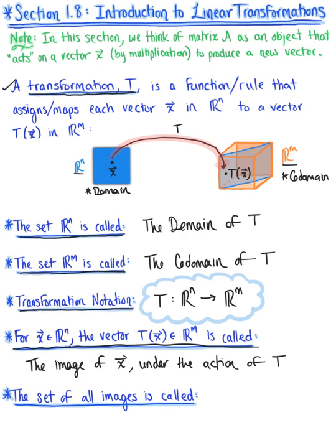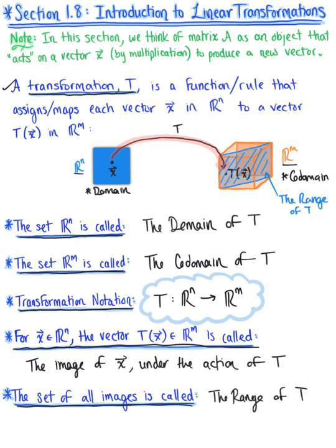Now this set of images is special — it is called the range of the transformation. The set of all images is called the range of our transformation. Looking at our illustration, we can see this region shaded in blue within the codomain — that shaded region is the range. The range exists within the codomain; it's not necessarily equal to the codomain, but it's certainly a subset. We have a special case when the range of a transformation equals the codomain.